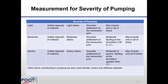Light severity is visible deposits of material, light stains, and shoulder sediment at the transfer joint — may include one or all of these. Moderate severity is visible deposits of material, moderate stains, shoulder sediment at the transfer joint, and moderate faulting at the shoulders — may include one or all of these. Severe is visible deposits of material, heavy stains, shoulder sediment at the transfer joint, and moderate to severe faulting at the shoulder greater than a quarter of an inch — may include one or all of these. Other items contributing to pumping include poor load transfer and low stiffness of the subbase.